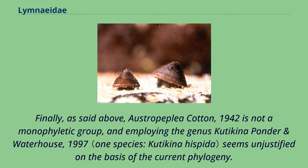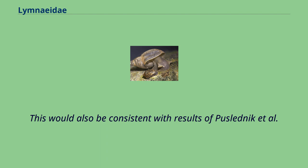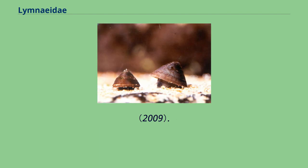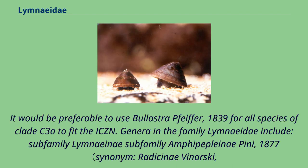Finally, Ostrapepli Cotton, 1942 is not a monophyletic group, and employing the genus Kutikina Ponder and Waterhouse, 1997 seems unjustified on the basis of the current phylogeny. This would also be consistent with results of Puzelnik et al. It would be preferable to use Bullistra Pfeiffer, 1839 for all species of clade CEA to fit the ICZN.